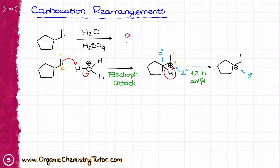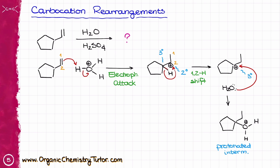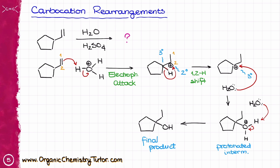When I have the new tertiary carbocation, I can now proceed with the nucleophilic attack because there is nothing else I can do — I cannot rearrange it to give a more stable carbocation. So the next step is the nucleophilic attack by water onto this tertiary carbocation, making a new carbon-oxygen bond. This is a protonated intermediate which is not particularly stable, so I want to get rid of the extra proton to make a neutral final product. I use another equivalent of water as a base to deprotonate, giving the final product. If I hadn't noticed the carbocation rearrangement, I would have ended up with OH on carbon two rather than the tertiary carbon, which would be the minor and incorrect product.